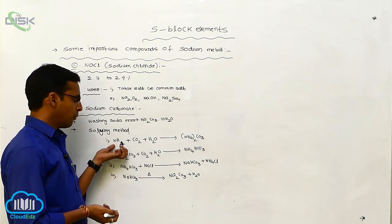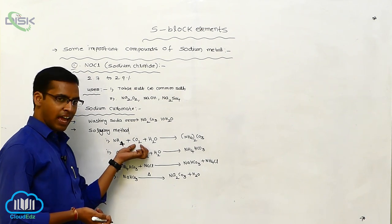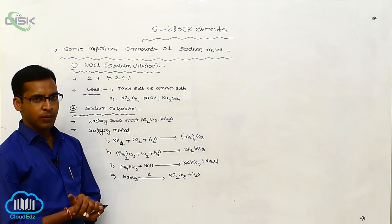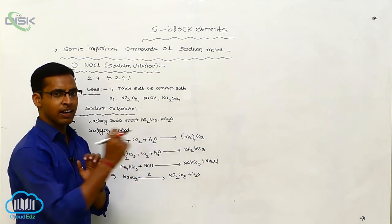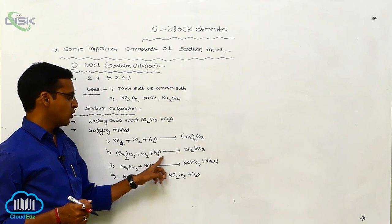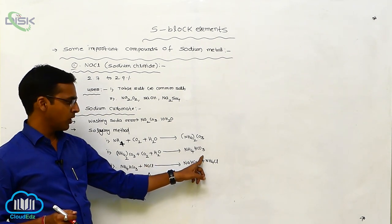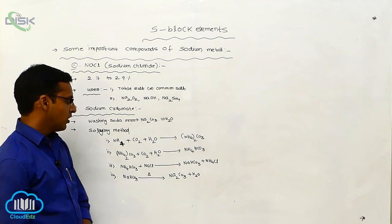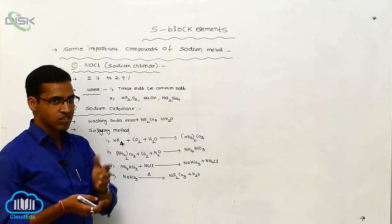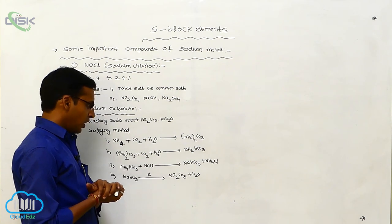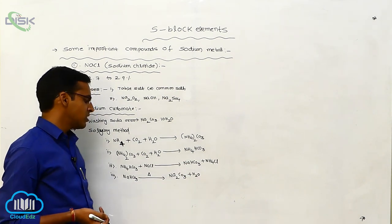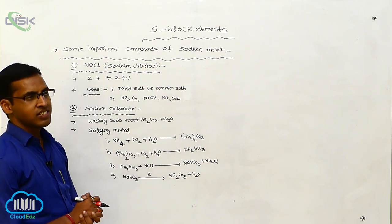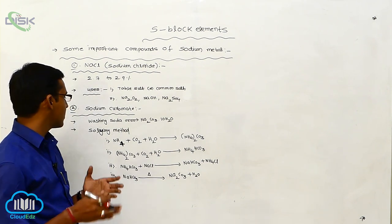To summarize the Solvay process: initially ammonia reacts with CO₂ and water to form ammonium carbonate. This ammonium carbonate, passed through CO₂ in water, forms ammonium bicarbonate. The ammonium bicarbonate reacts with sodium chloride — which is highly soluble in water — giving sodium bicarbonate. This bicarbonate on heating gives sodium carbonate.